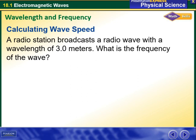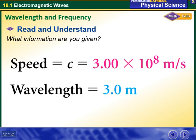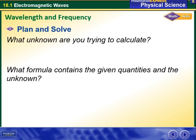For example, a radio station broadcasts a radio wave with a wavelength of 3 meters. What is the frequency of the wave? First, we understand what information is given to us. We have the speed which is c, which is 3 times 10 to the power 8 meters per second. Then we have the wavelength which is 3 meters. I take them both and put them in my equation.